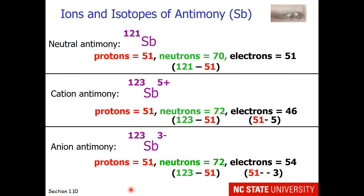Now let's try an anion. Once again, protons are 51. This isotope has 72 neutrons, and the charge on this antimony is minus 3. So we have to have extra electrons — more electrons than protons. If we take the number of protons minus the charge, that's 51 minus (negative 3), which gives us 54 electrons. Electrons are in greater number than protons, hence we have a negative charge and an anion.